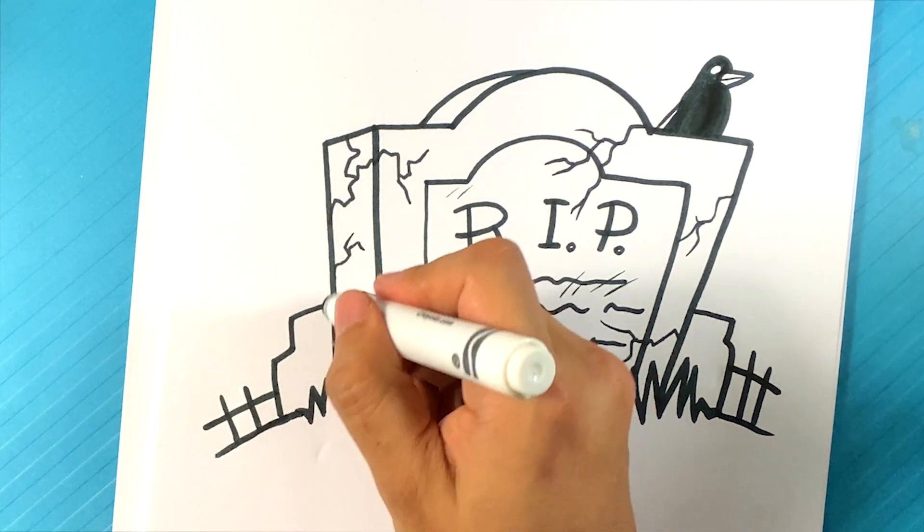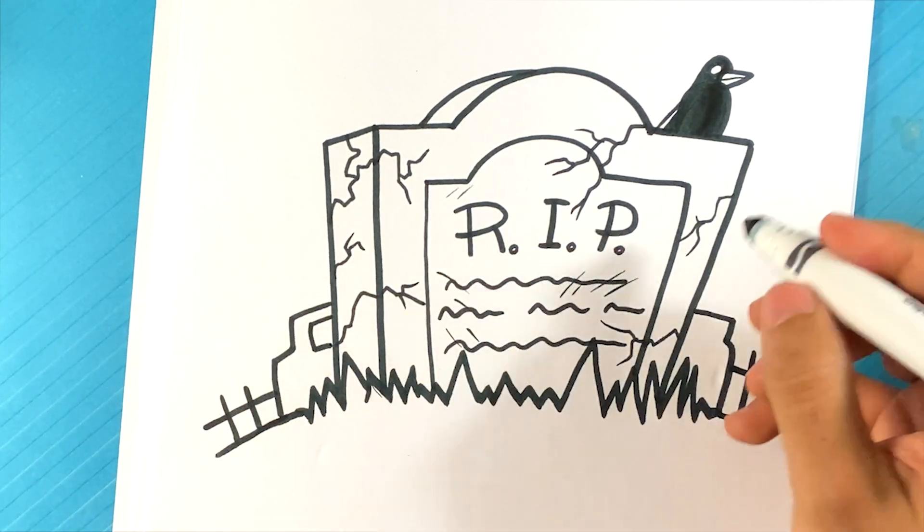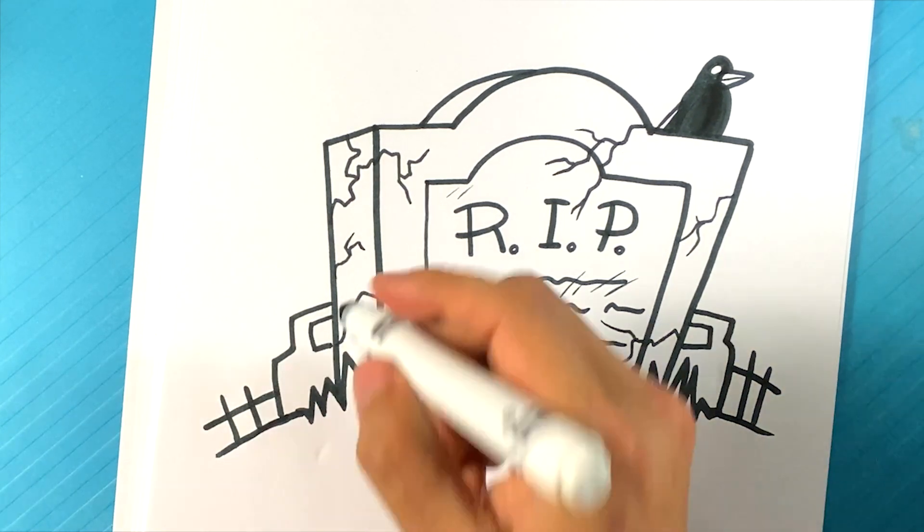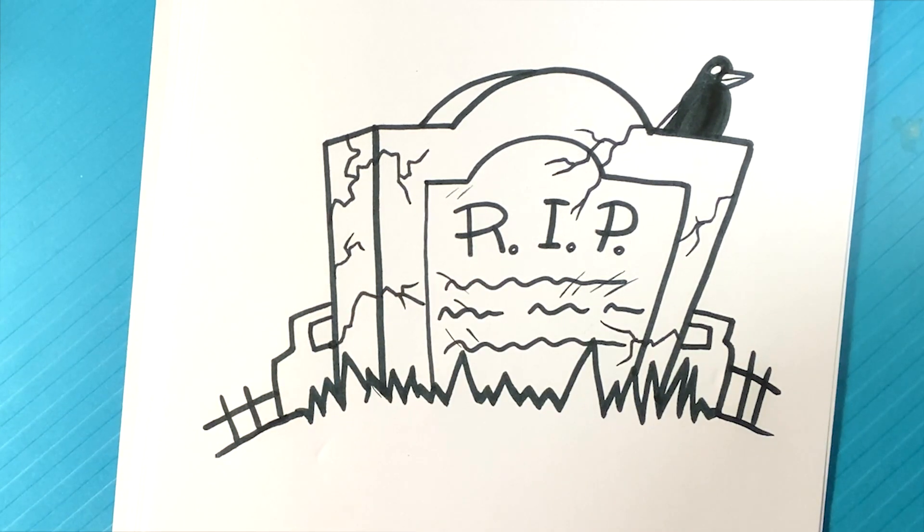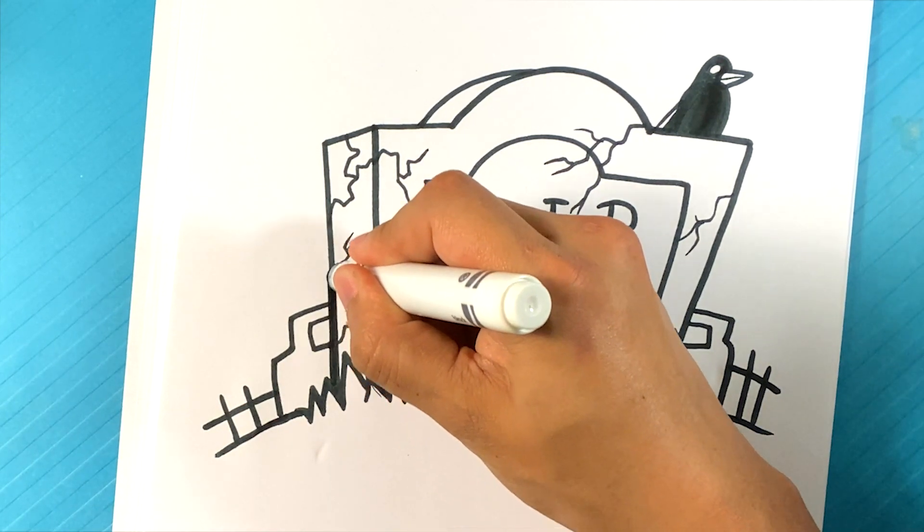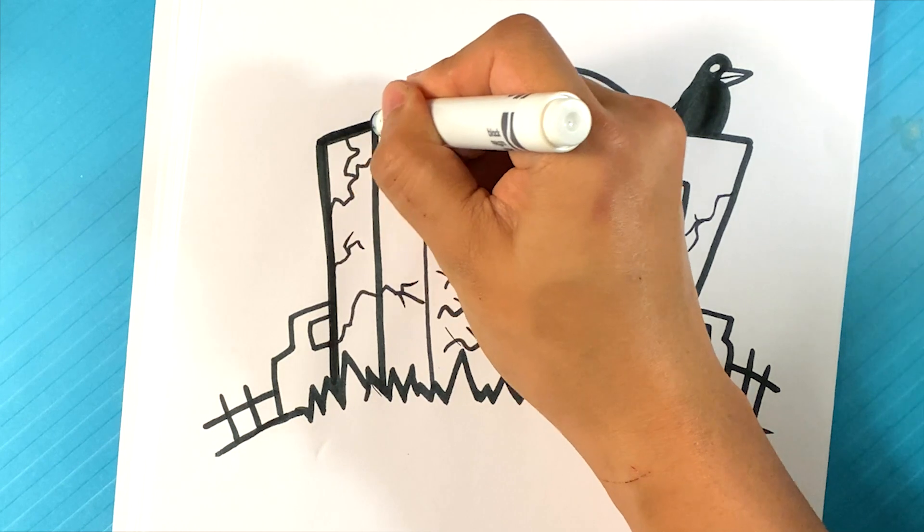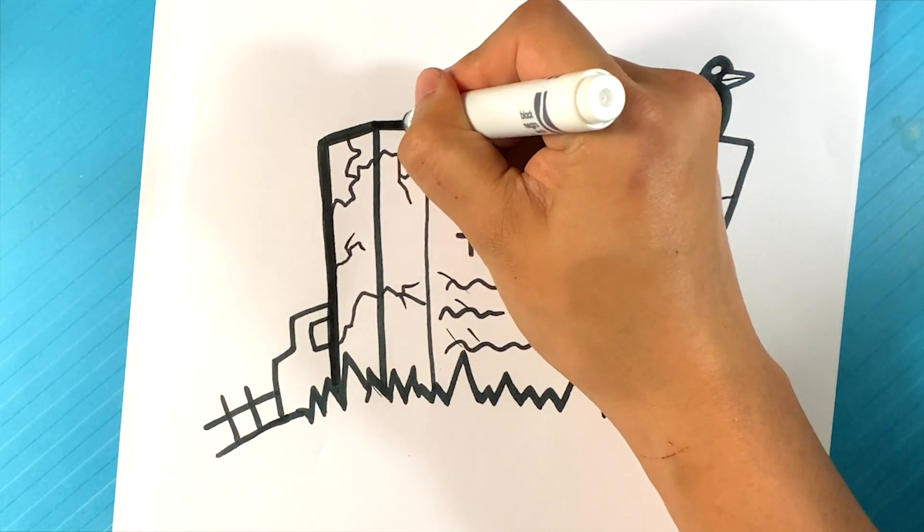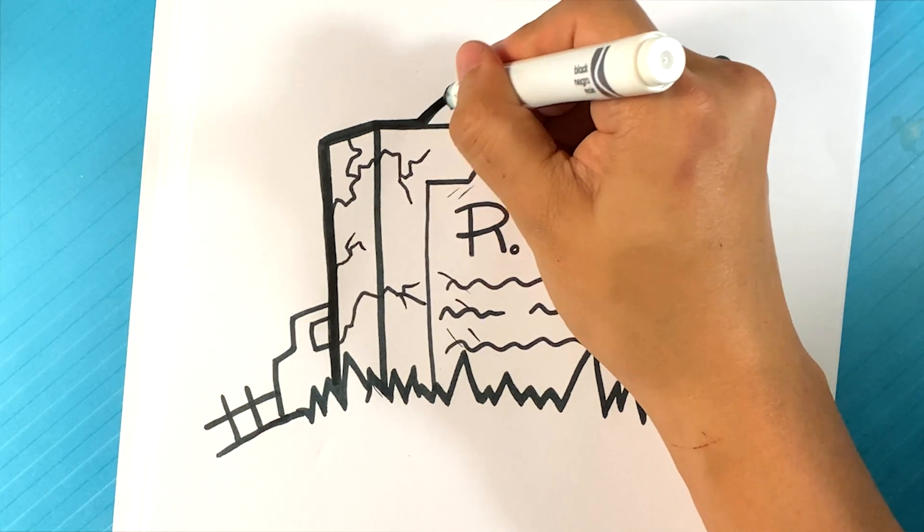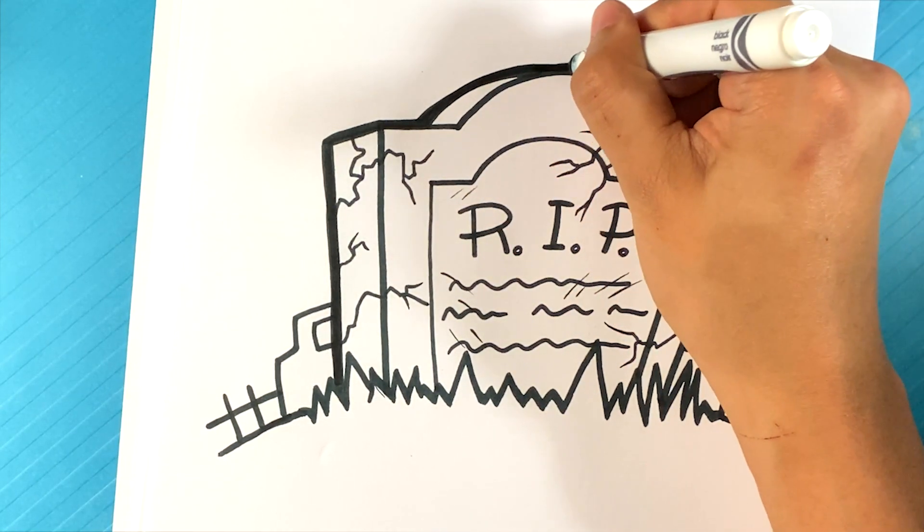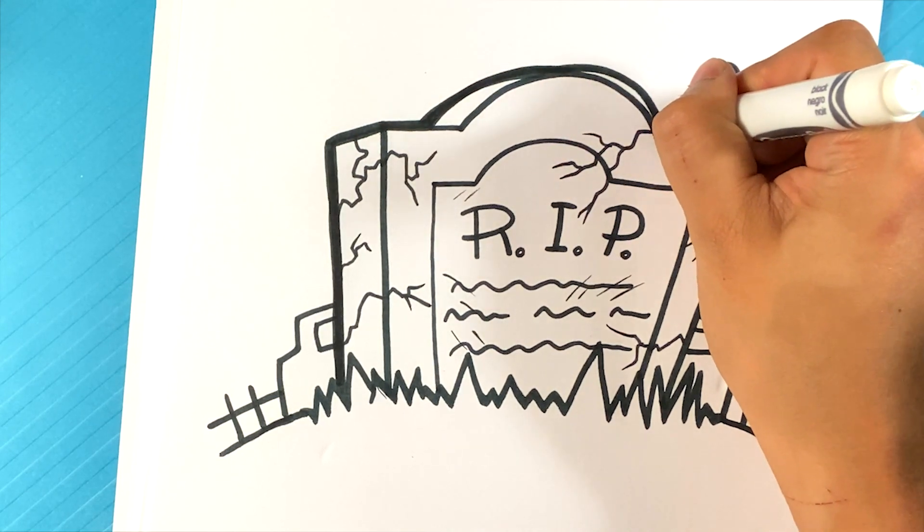A line over there, just kind of do that, go through a thicker line. Curve over here.